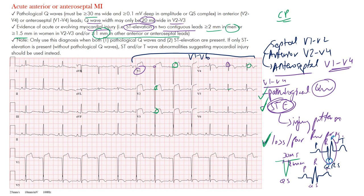We only make the diagnosis of acute anterior or anteroseptal MI when we have pathological Q waves, ST segment elevation, and likely loss of R wave progression in the precordial leads. If we just see the ST segment elevation, we code that as a myocardial injury pattern — which is likely going to evolve into a full MI. To summarize: V1 through V4, Q waves, ST segment elevation, and likely loss of R wave progression, since a large portion of the left ventricle is involved.